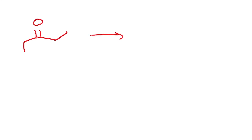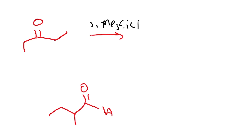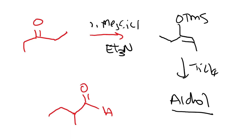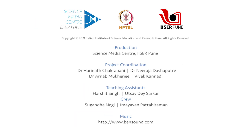Let us look at one example: we start with diethyl ketone and want to react it with an aldehyde. Step one would be TMS-Cl in the presence of triethylamine, which generates the TMS silyl enol ether. The next step would be to react it with the aldehyde in the presence of titanium tetrachloride, which gives the aldol product. I would urge you to draw the product out yourself.